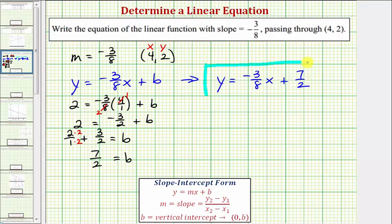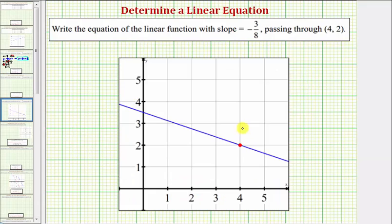Now to verify this is the correct equation, what we could do is plot the point four comma two on the coordinate plane, and then graph the line given by our equation to make sure the line does pass through the point four comma two. And I've already done this. Here's the point four comma two, and this blue line is a graph of our equation, and notice how the line does pass through the point four comma two. Verifying our equation is correct.